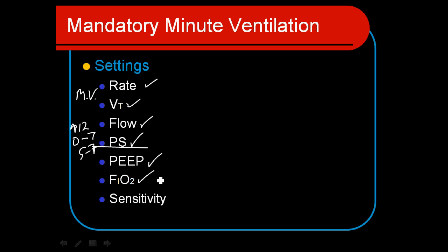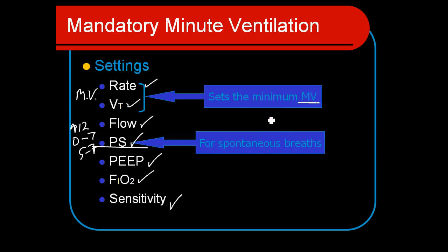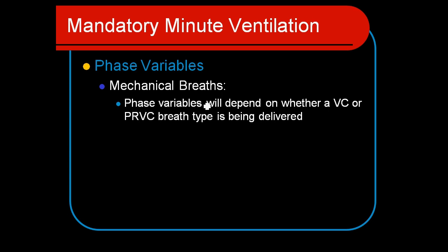We also set PEEP, FiO2, and sensitivity — the PEEP depending on how much oxygen support they need, and we manage these as required. The sensitivity is always set on the ventilator. The rate and tidal volume establish the minute ventilation goal, while the pressure support level determines how much work augmentation we give the patient — whether we want them doing a lot of work, a little bit, or almost none — which is a clinical decision.